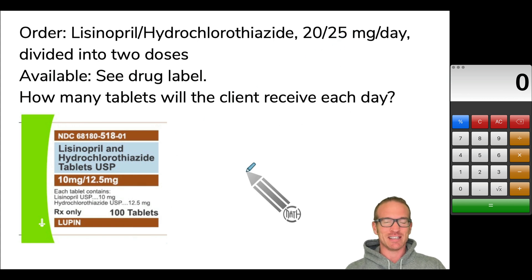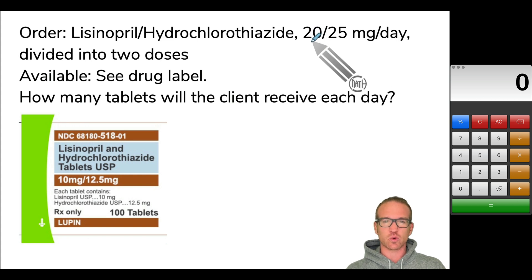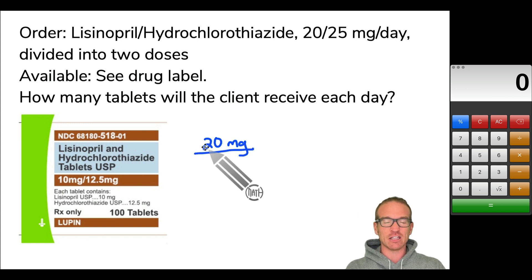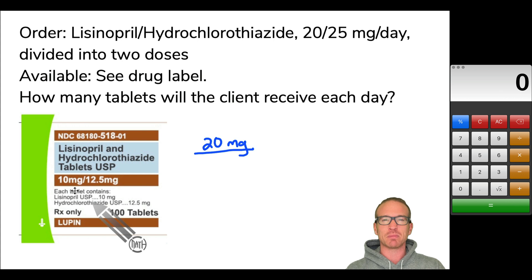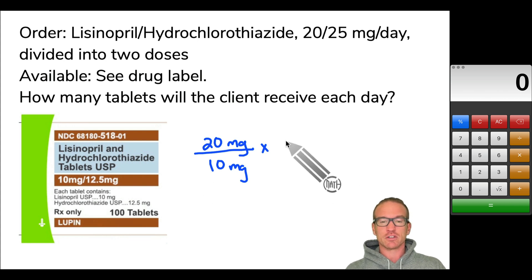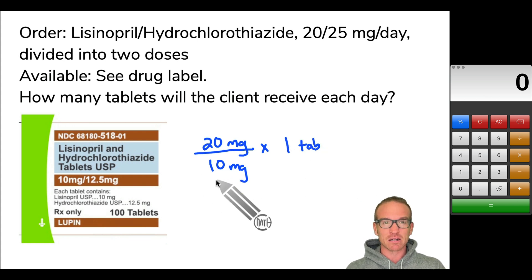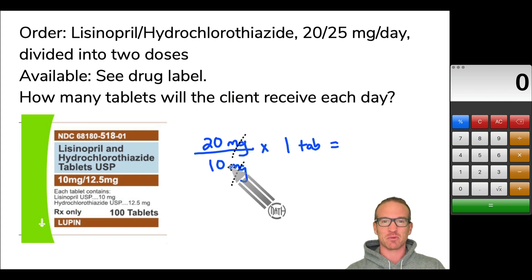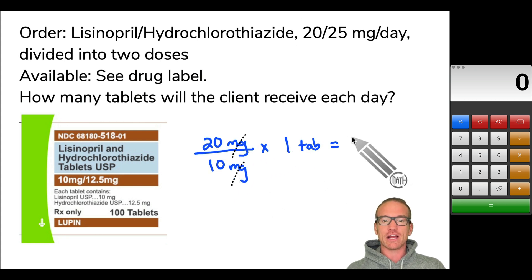We can do dimensional analysis, but let's use desired over have times quantity. I'm going to use the lisinopril here. What is desired is 20 milligrams of lisinopril — so 20 milligrams desired, over what is available. Make sure you use the right one: lisinopril is the first word, and the label shows 10 milligrams available per tablet. So 20 milligrams desired divided by 10 milligrams available, times 1 tablet. The units cancel, and 20 divided by 10 is two times one tab. Our answer is two tablets.